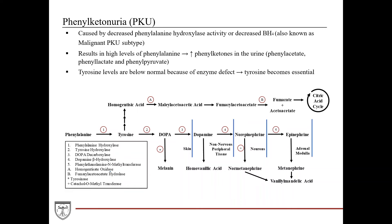Now for clinical pearls relevant to aromatic amino acids. First, phenylketonuria — a very high-yield disorder. It is caused by decreased phenylalanine hydroxylase activity, the enzyme responsible for converting phenylalanine to tyrosine. You can also have decreased BH4, since BH4 is a cofactor for phenylalanine hydroxylase — even with normal enzyme levels, decreased BH4 means the enzyme can't function properly. This is known as the malignant PKU subtype.